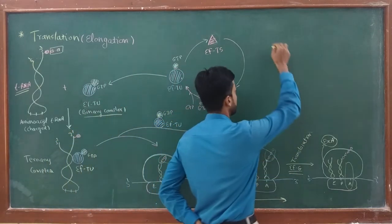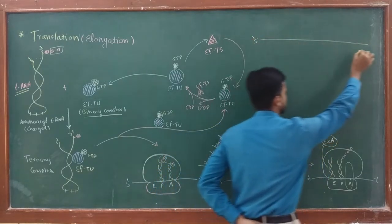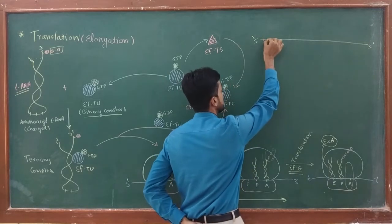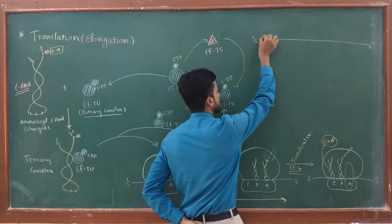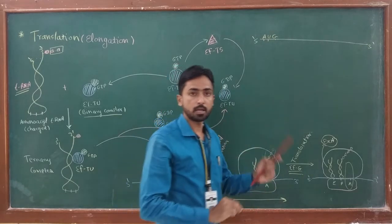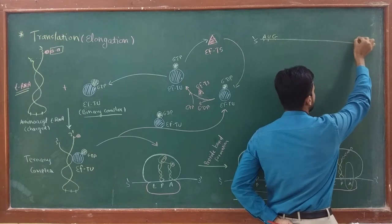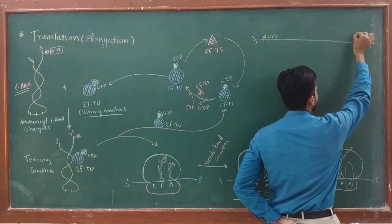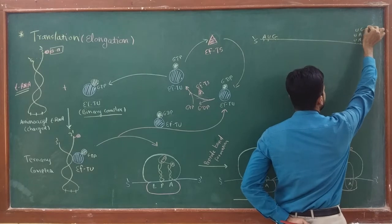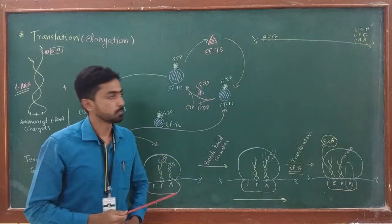In initiation, we see that when mRNA is produced, it generally has two different types of codons. First, at the five-prime end, mRNA shows AUG, or a start codon, while at the three-prime end, mRNA has a stop codon, which may be UAA, UAG, or UGA. Any one of these three can serve as a stop codon.